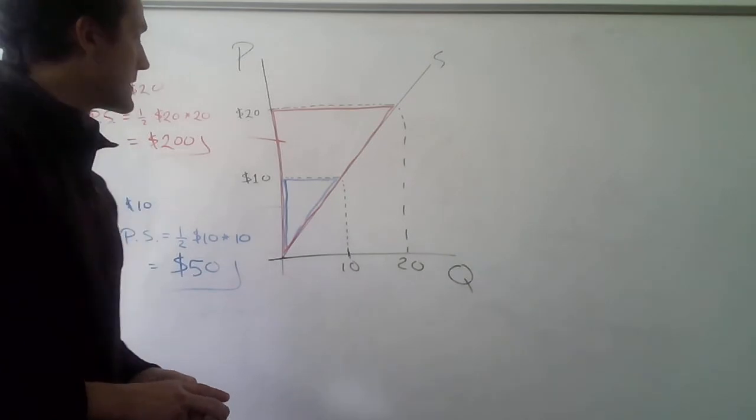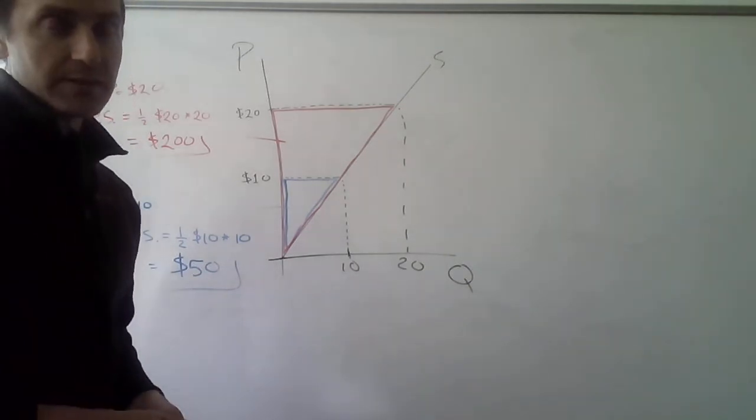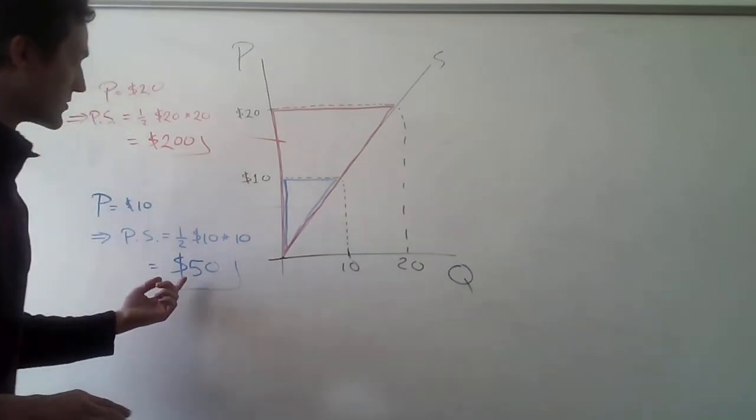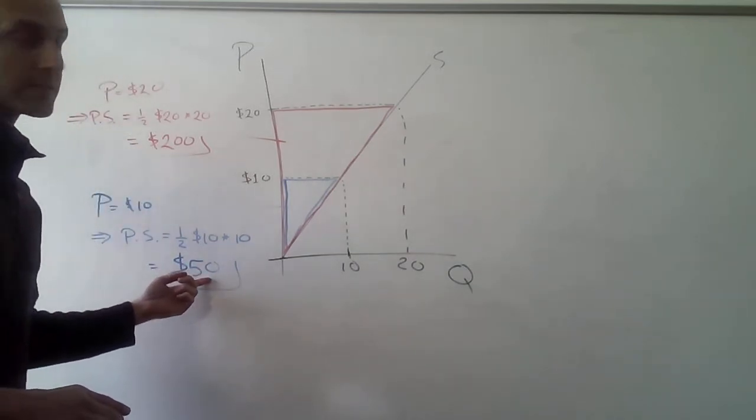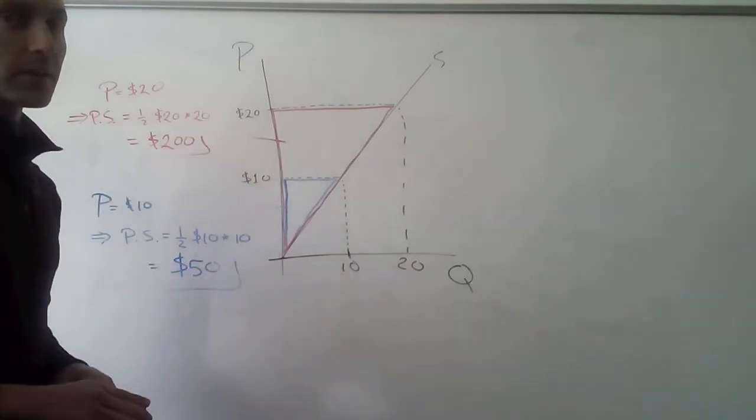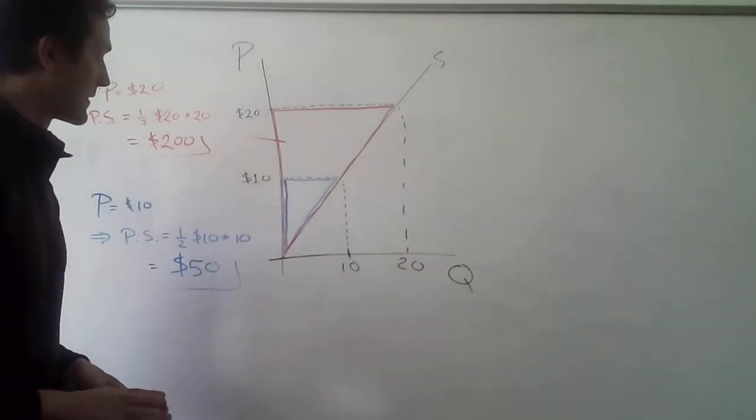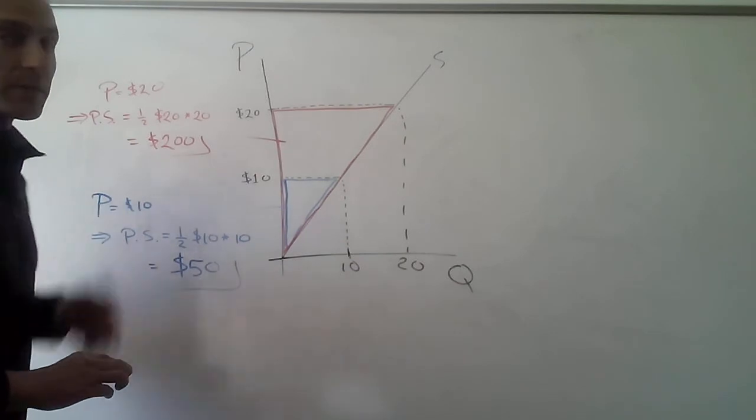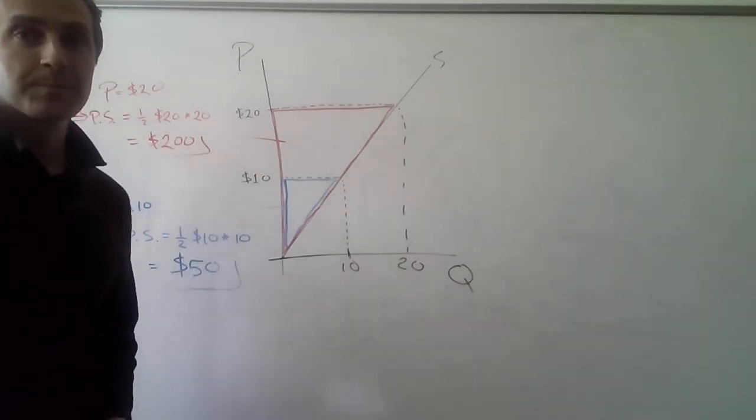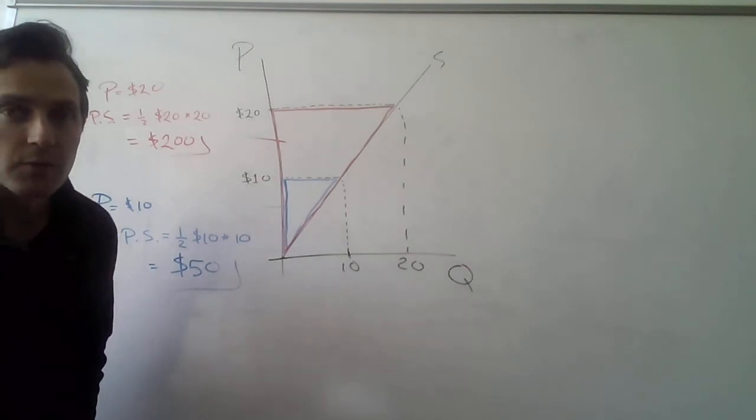And so we see that the change in producer surplus, which is what we asked ourselves at the very beginning, is that producer surplus went from $50 to $200 from the price changing from $10 to $20, which means that the producer surplus, of course, increased by $150, right? Okay. Thank you very much for watching.